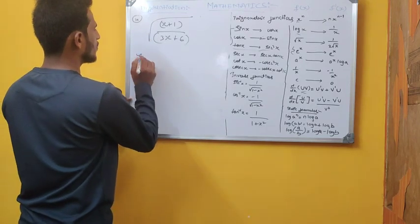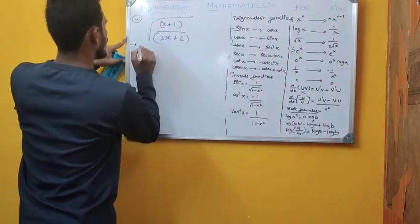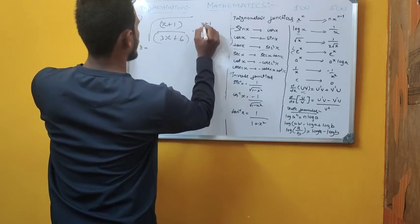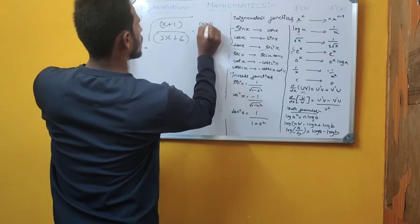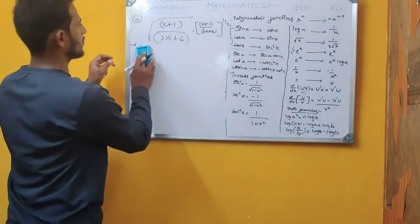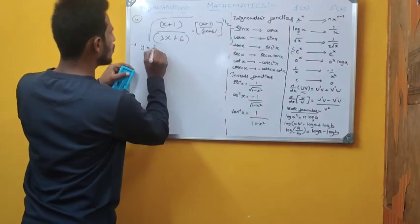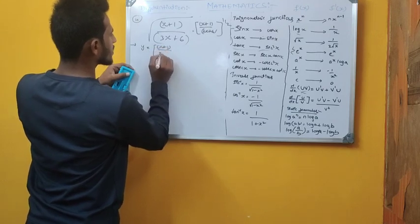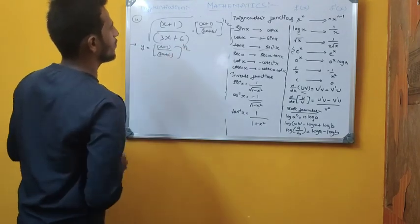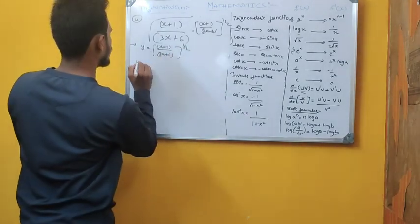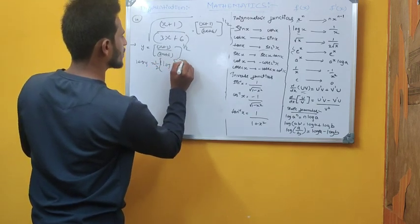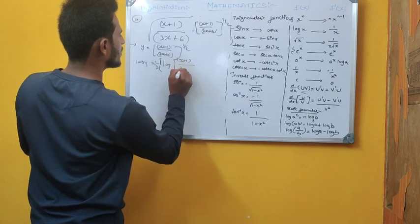The next function is y = [(x+1)/(3x+6)]^(1/2). We apply log on both sides: log y = (1/2)·log[(x+1)/(3x+6)].